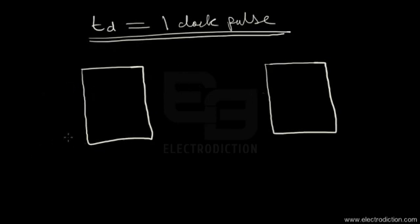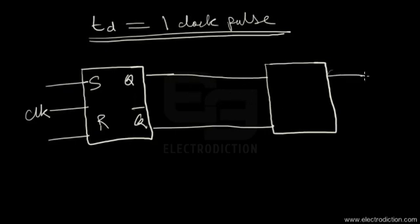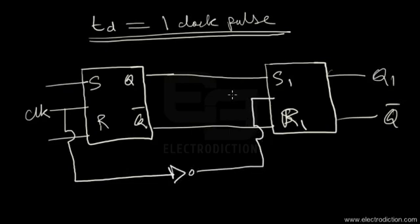So if these are the two SR flip-flop diagrams — here we have Q and Q bar with a clock, and on the other hand we have Q1 and Q1 bar with S1 and R1 inputs. From the clock of flip-flop 1 we connect a NOT gate and feed it to the clock of flip-flop 2. So this is clock 2 and clock 1 respectively.